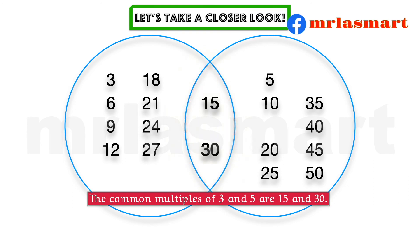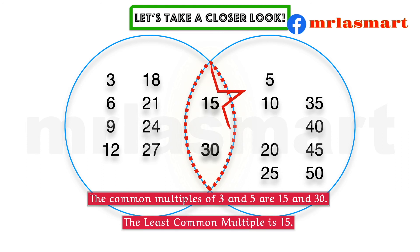The common multiples of 3 and 5 are 15 and 30. The least common multiple is 15.